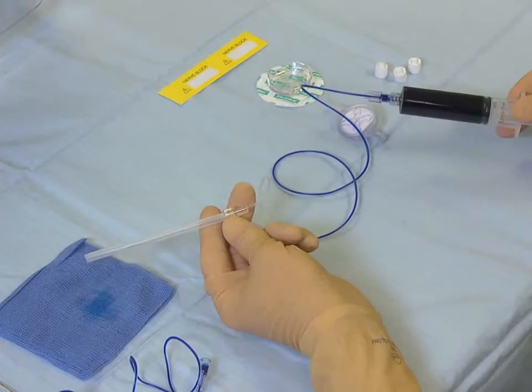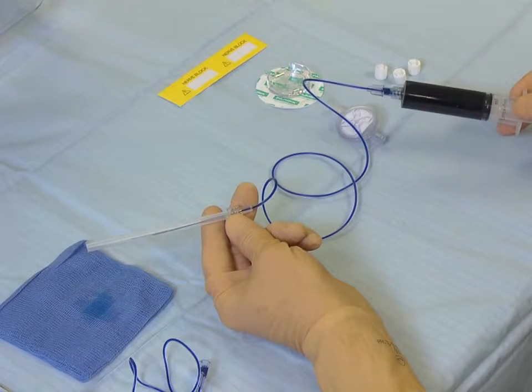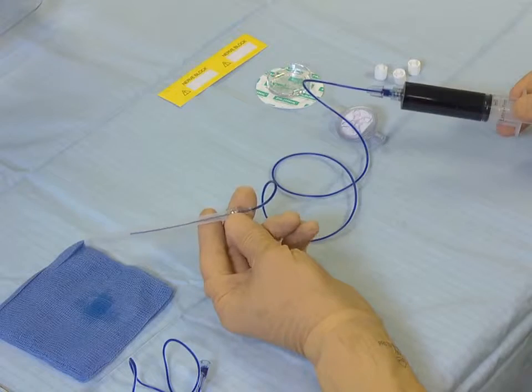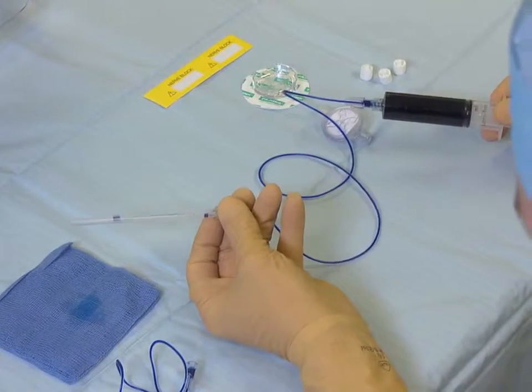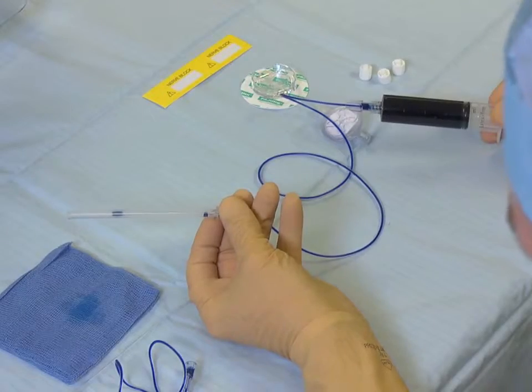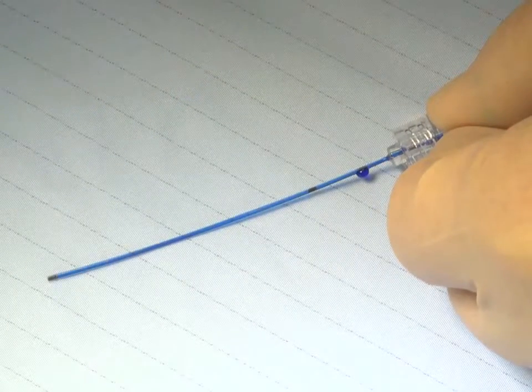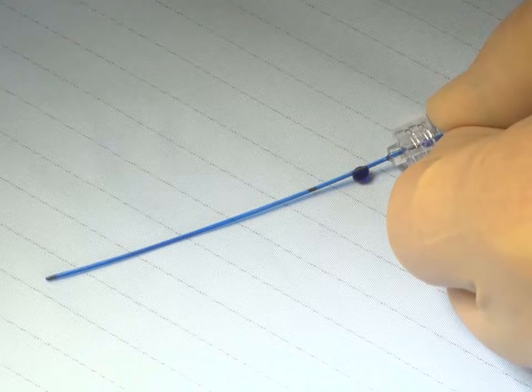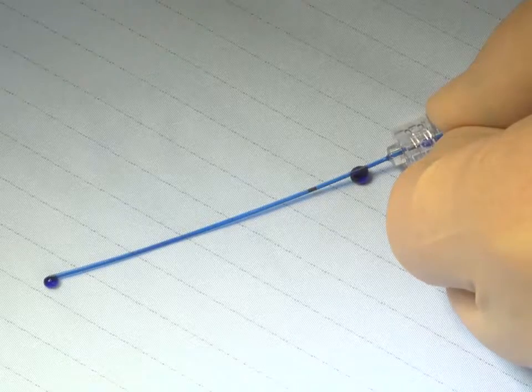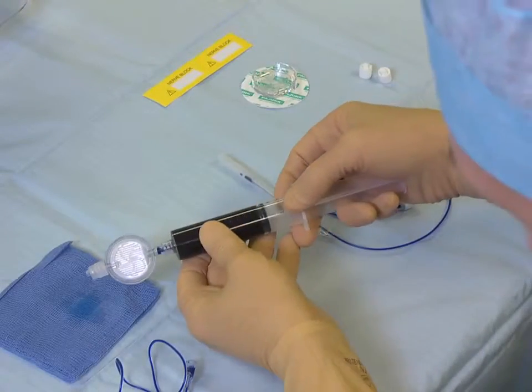Prime the E-Cath itself. Again, you will see fluid exiting from the proximal and the distal points of the catheter. Next, prime the filter to ensure that all air is removed.